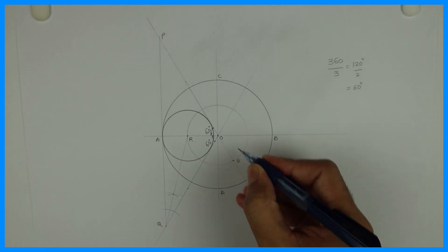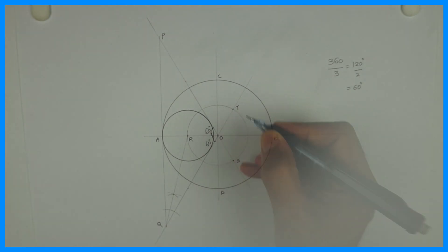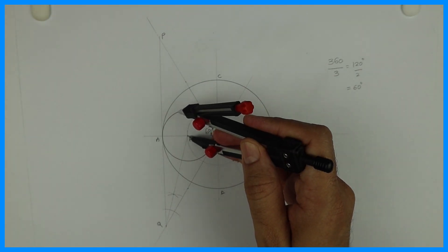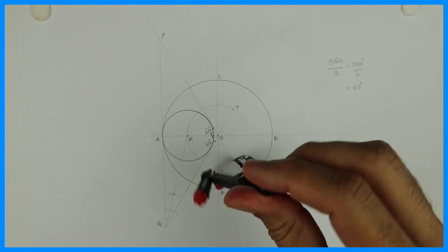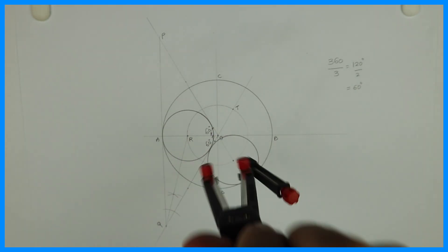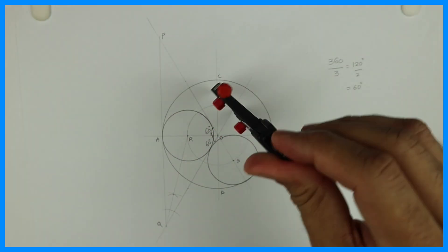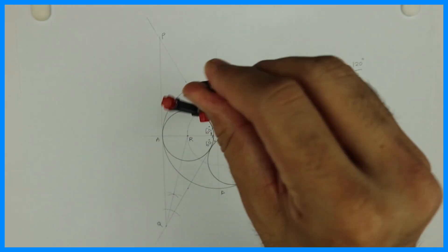So what will happen? We'll get point S and T. Then you take the same radius R to A and you keep a compass at S and T and you draw the required two circles. So we got three circles inside a circle.